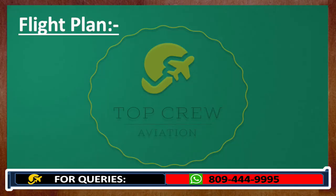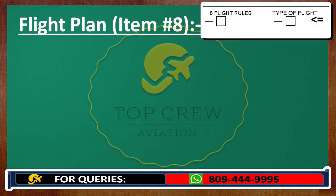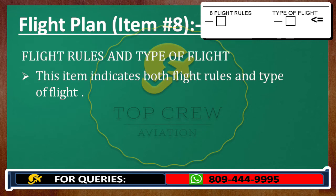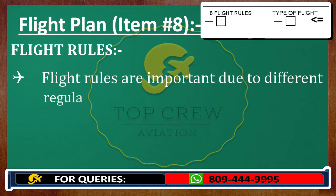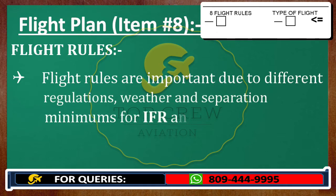We would discuss about item number 8, which is for flight rules and type of flight. This item indicates both flight rules and type of flight. Flight rules are important due to different regulations, weather, and separation minimums for IFR and VFR flights.